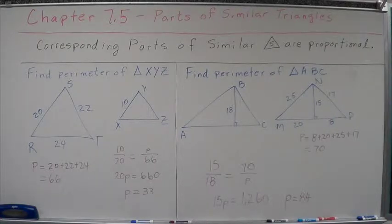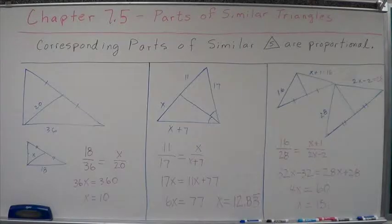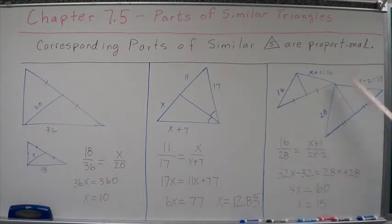All right. That's using, finding perimeter, using corresponding parts of similar triangles and setting up their proportions and their ratios. Okay, we've got three more problems. Let's look at them pretty quick. Again, we're looking at parts of similar triangles and corresponding parts of similar triangles are proportional.